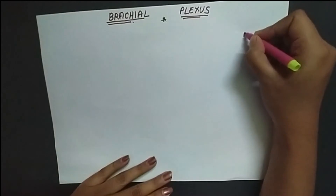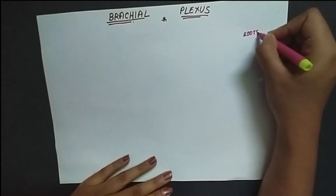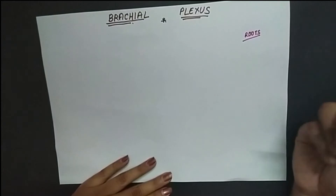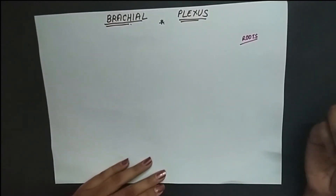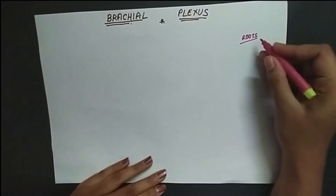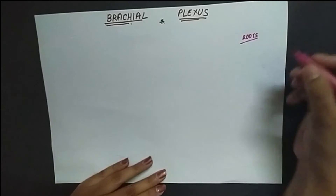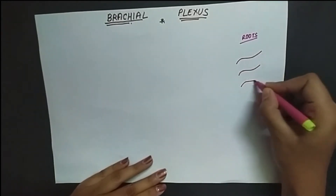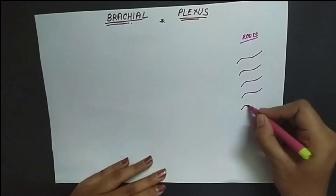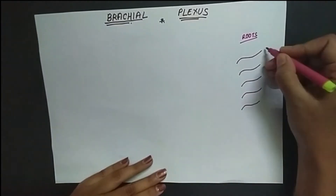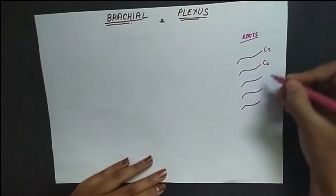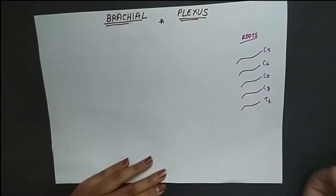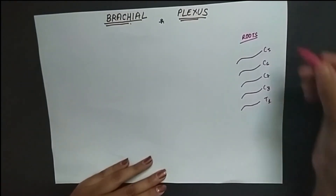First we have the roots. Please draw with me so that you can understand it properly. We have five roots: C5, C6, C7, C8, and T1. These are the roots.